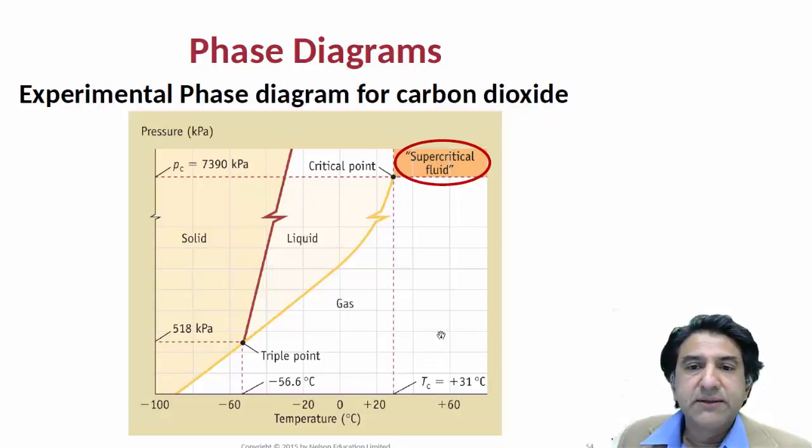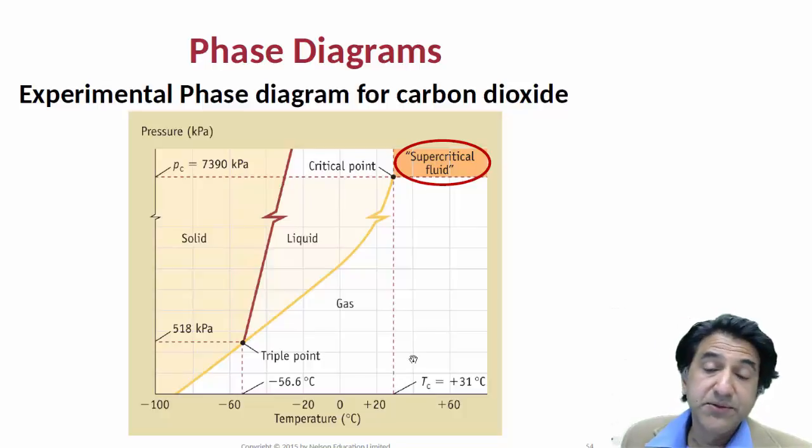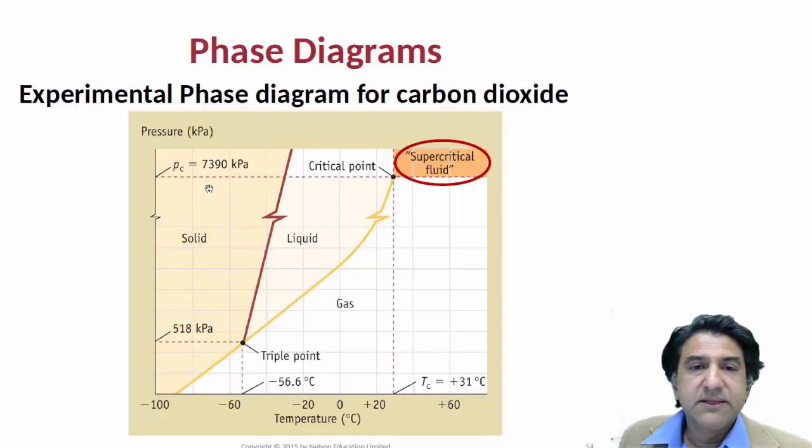Now there's something very interesting if we expand the graph for some particular materials, actually most materials. This is the phase diagram for carbon dioxide. It looks exactly as you would expect. There's a triple point over here. Solid liquid and gas. And what we find is everything is more or less normal. You can see the slope of the carbon dioxide line is positive here, unlike for water.